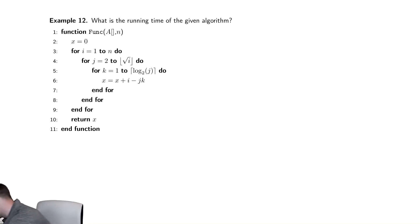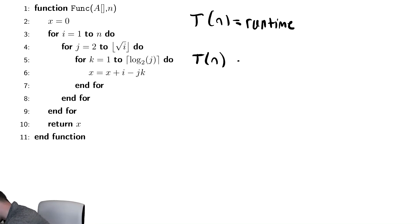Just as we've seen in the past, we're going to let t of n be the running time. So t of n equals runtime. And then we write t of n as a summation. So this is three summations, one for each for loop that goes from one to n.